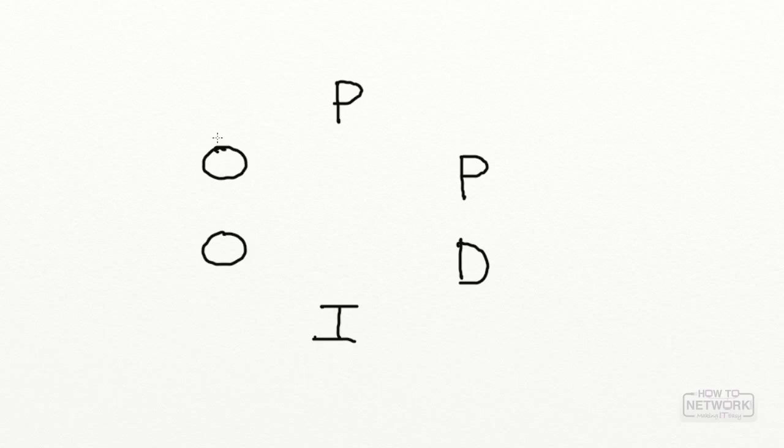Now it's your turn — on a piece of paper or whiteboard, draw out the PPDIOO methodology. Start with the first P and write out the full chart: what each letter stands for, and put a sentence next to each word to summarize the activity that occurs at that phase. Go ahead and do that now and pause the video.